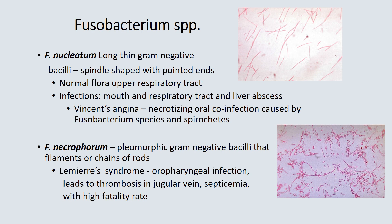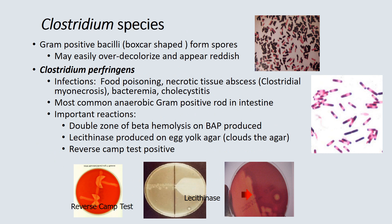Fusobacterium species are very important anaerobes with unique gram staining. F. nucleatum forms a very long, thin, spindle-shaped gram-negative bacillus with pointed ends and is normal flora in the upper respiratory tract, usually causing infections of the mouth, respiratory tract, and liver abscess. It also causes Vincent's angina — a necrotizing oral co-infection caused by Fusobacterium and spirochetes. F. necrophorum forms chains of gram-negative rods and is the cause of Lemierre syndrome — an oropharyngeal infection leading to jugular vein thrombosis, septicemia, and a very high fatality rate.